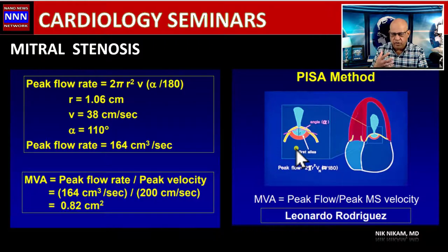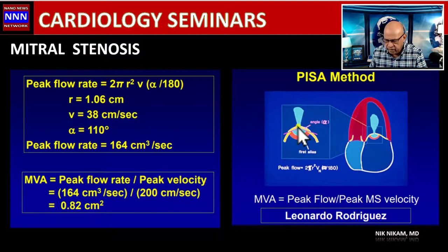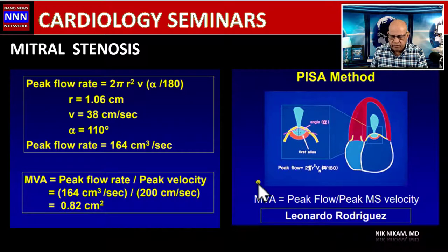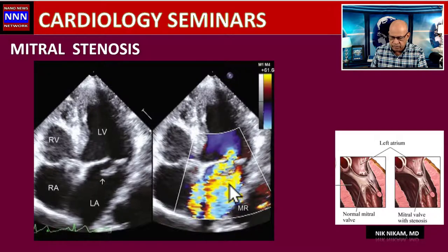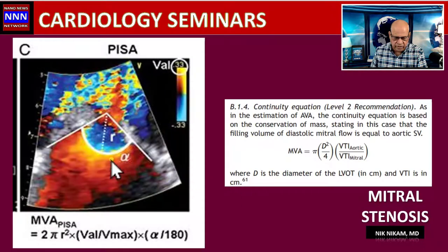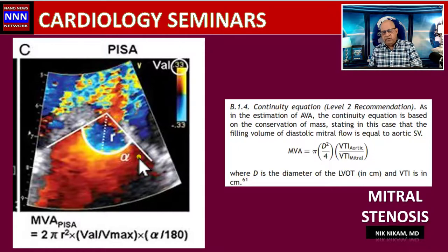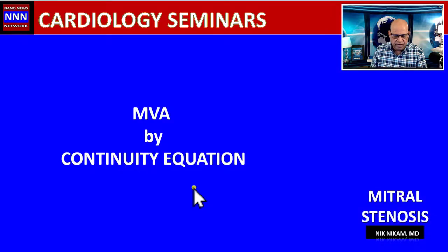This technique depends upon obtaining very high-quality images. Here is an example where the aliasing is not very clear, making it difficult to measure, compared to one with a clear, measurable aliasing radius and angle, which can be useful in determining mitral stenosis area.